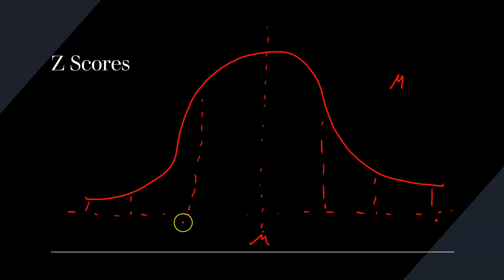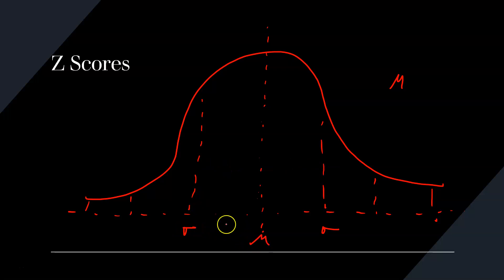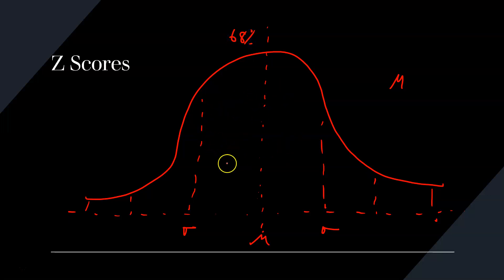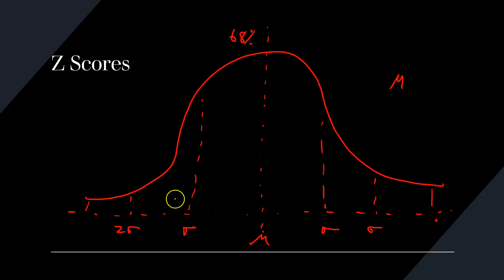We could say between one standard deviation from the mean both ways, there's a 68% chance of something happening. We can say two standard deviations, there is a 95% chance of an event happening between two standard deviations.